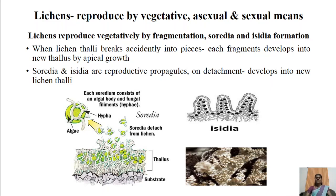In the second case, by mechanical injury to the lichen thalli, a segment of the thalli gets separated and this separated piece is referred to as a fragment. This fragment by apical growth develops into a new lichen thallus. Vegetative reproduction also takes place by two important propagules: soredia and isidia.